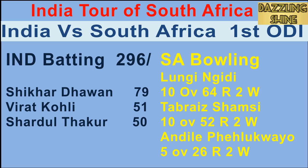Third ball of the 48th over, Nagidi to Thakur — he puts it away nicely through extra cover for four. Very next ball, Thakur takes the outside edge and it goes past the wicket keeper for another boundary. And the very next ball, Nagidi to Thakur — it's in the slot and Thakur smashes it over square leg for a maximum! What a shot. At the end of 48 overs, India are 254 for 8.